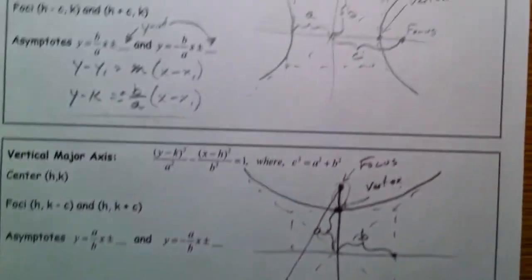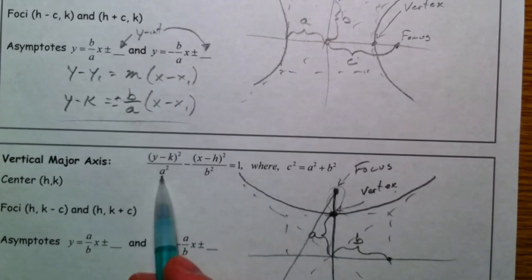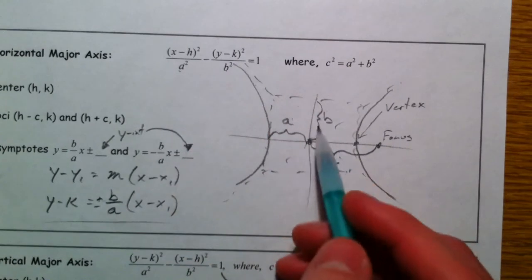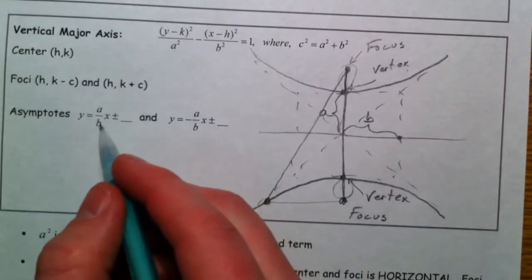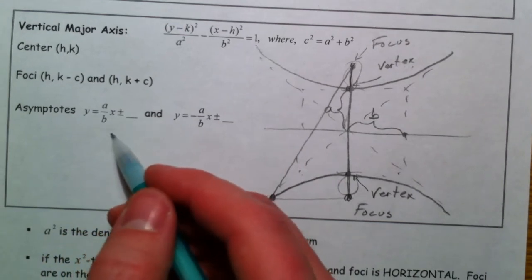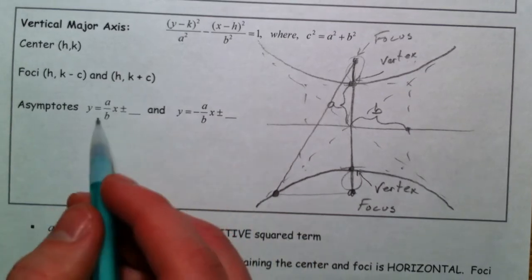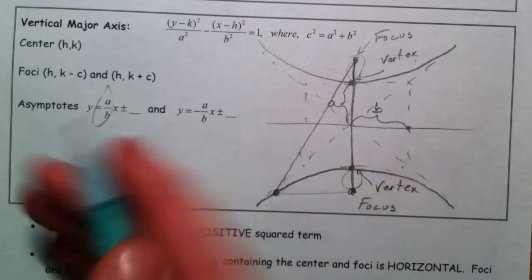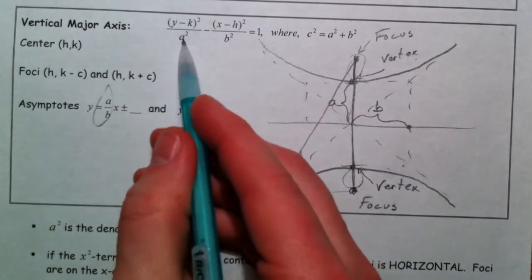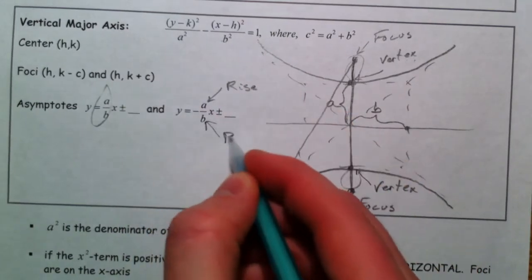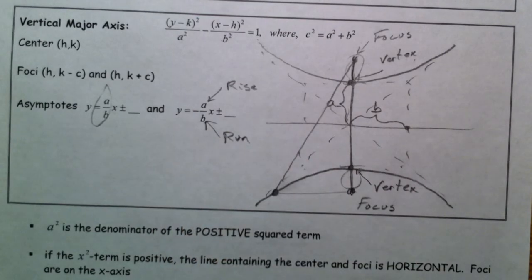What I want us to notice is that the number underneath y tells us how far up and down to go, even though the letters change. A over b is the y value over the x value, so I don't try to memorize this equation — I just say it's the rise over the run. That's how I remember; I don't remember a and b.